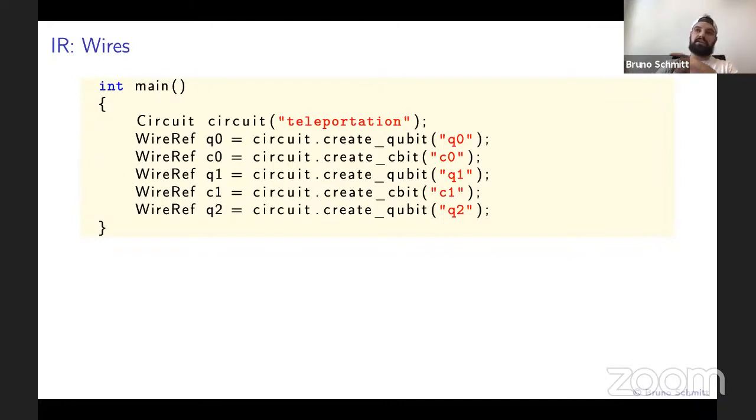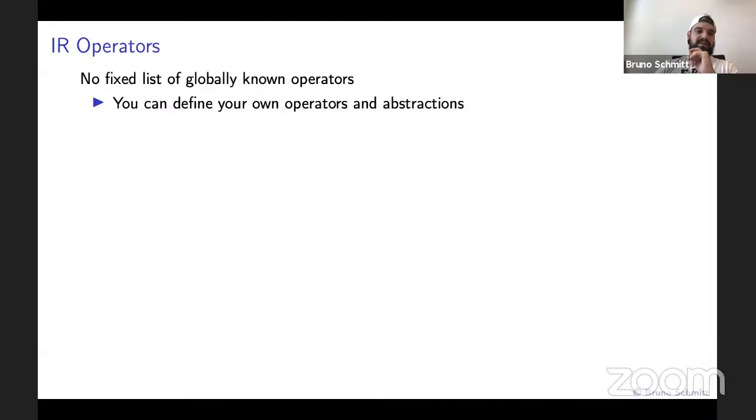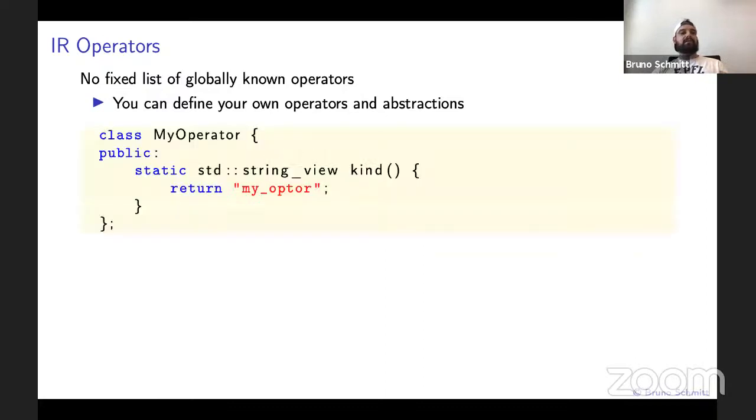But first, we will need to understand the operators. And here is where one of the strengths of the library lies: its open ecosystem of operators. What do I mean by that? In Tweedledum, you can easily define your own operators and abstractions in the IR. How easily, you might ask? Quite easy. Let me show an example to illustrate this.